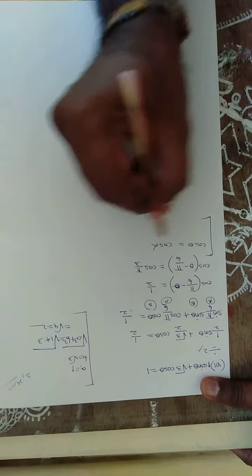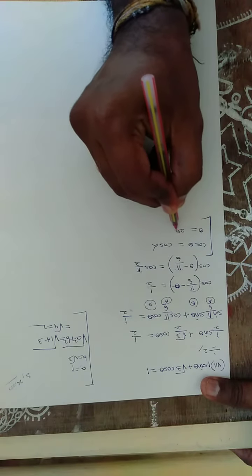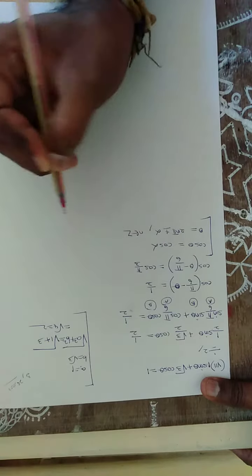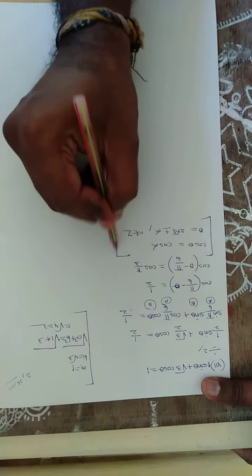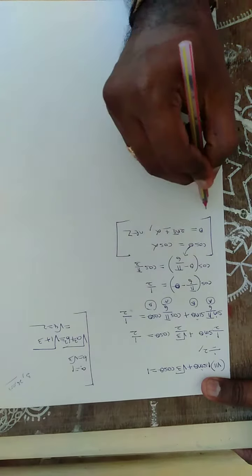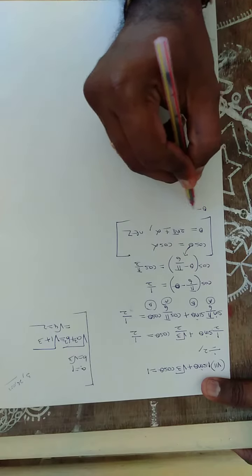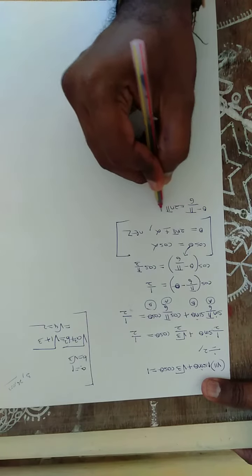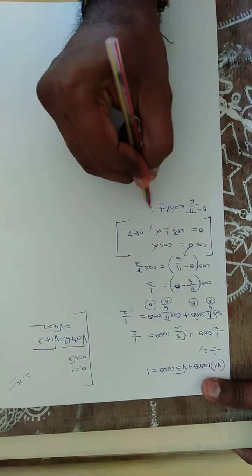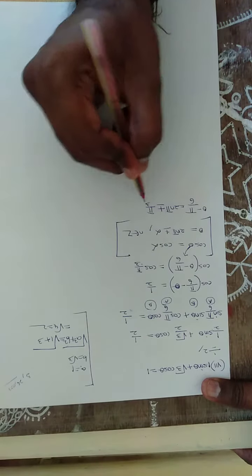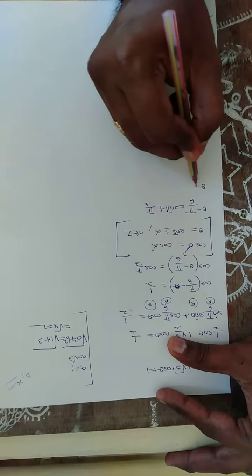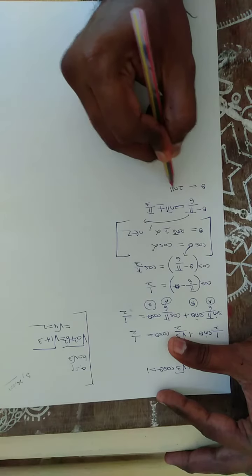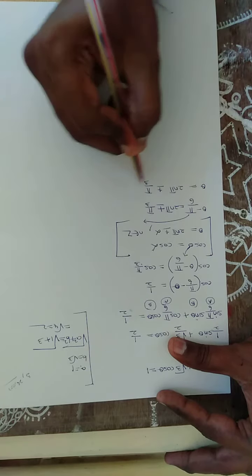We use the general formula: cosθ = cosα implies θ = 2nπ ± α, where n belongs to Z. Comparing, θ here is (θ - π/6) and α is π/3. So: θ - π/6 = 2nπ ± π/3.